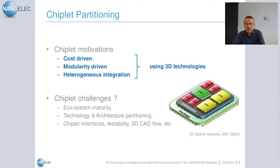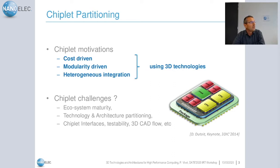There are various chiplet challenges. The first is ecosystem maturity, which will move progressively from IP reuse to chiplet reuse. In terms of system level design, the simple Lego analogy is not as simple as it looks — it needs deep thought in terms of both technology and architecture partitioning. Various challenges also exist regarding circuit design, for instance on chiplet interfaces, testability, 3D CAD flows, and so on.